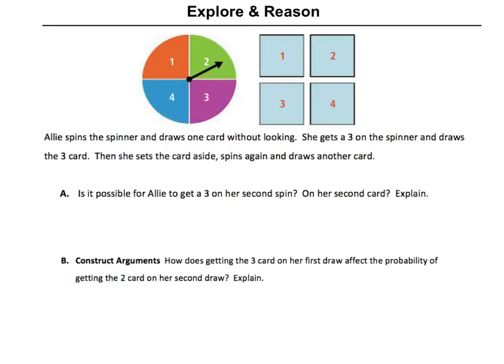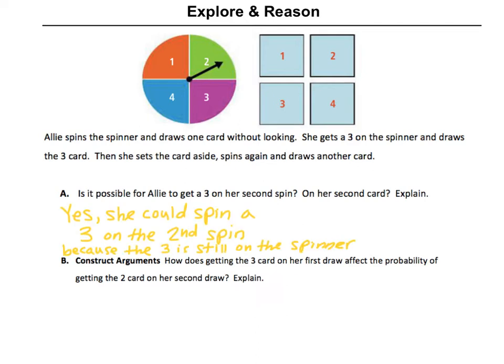Let's look at this explore and reason before we jump into our lesson. Suppose Allie spins the spinner shown and draws one card without looking. She gets a 3 on the spinner and draws the 3 card. Then she sets the card aside, spins again, and draws another card. Is it possible for Allie to get a 3 on her second spin? Yes, it would be — because even though she got it the first time, all four sections are still on the spinner, so it's still possible for her to land on a 3 again.